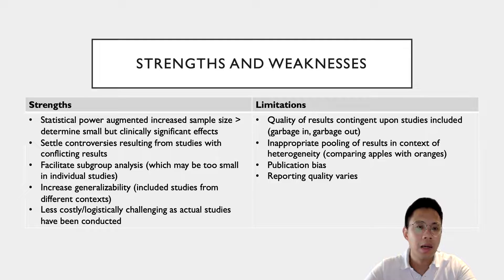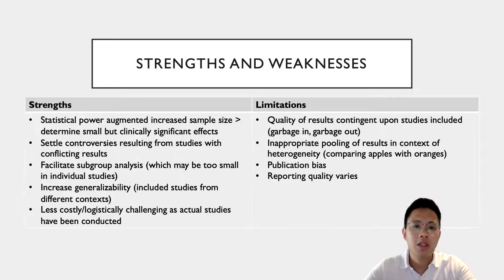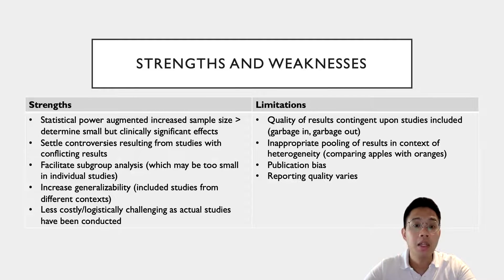Pulling the different existing studies together is less costly and logistically less challenging than doing a huge study, as these studies have already been conducted. Limitations, however, include that the quality of the meta-analysis and systematic review is oftentimes contingent upon the studies that are included — hence the concept of garbage in, garbage out. Sometimes the results that are pooled together can be inappropriate when there's too much heterogeneity, resulting in a situation where we're comparing apples to oranges and the statistical analysis in that context may not necessarily be meaningful. There can also be publication bias, and the reporting quality across different systematic reviews and meta-analyses varies.